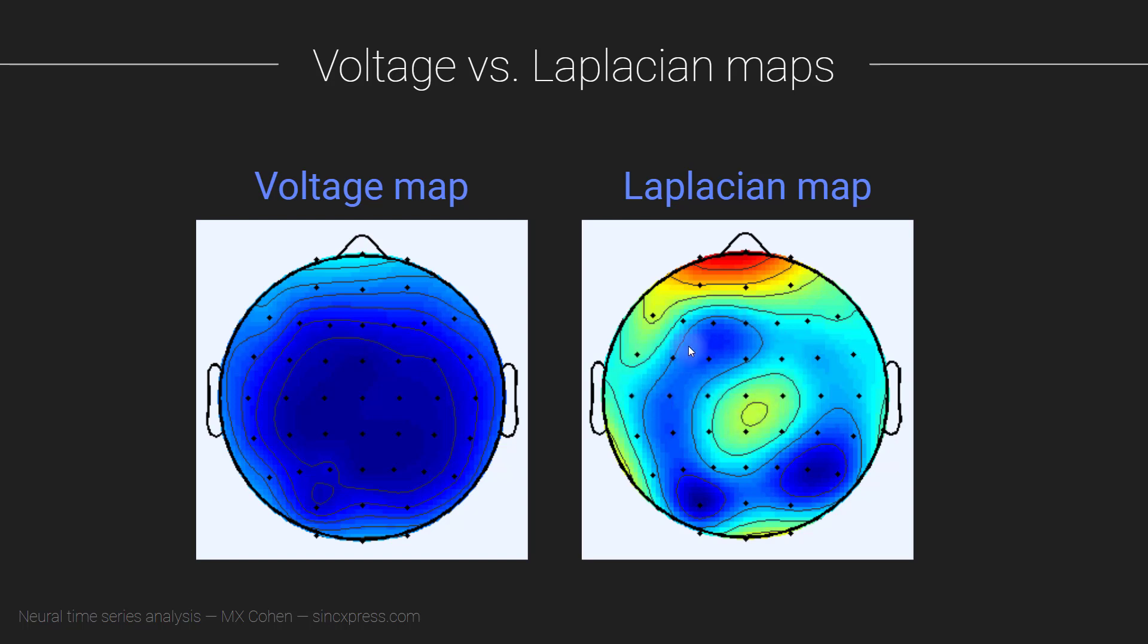Here we have large, low-frequency topographical features, and we filter them out, and that allows us to focus more on the local features. Now you can see why the Laplacian is useful for electrode-level connectivity analyses. You can already imagine that computing synchronization between, let's say, this channel and this channel, here those two channels are going to be really strongly synchronized because they are both measuring the same deep source that is affecting basically the entire map. But then we look over here, and you see these same two electrodes, they no longer look like they would be so strongly synchronized.